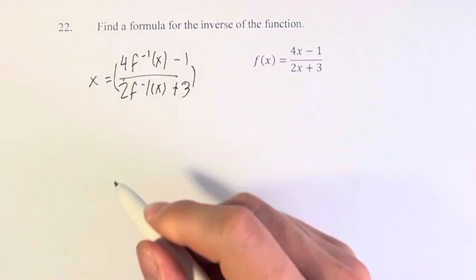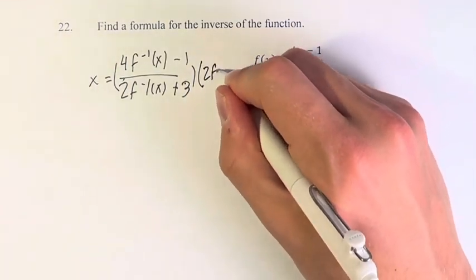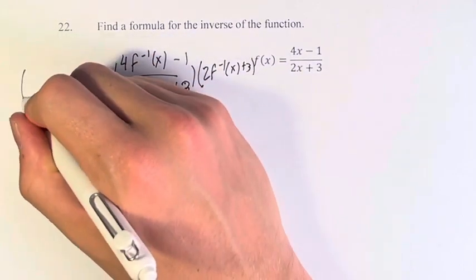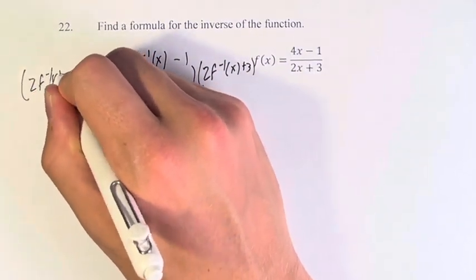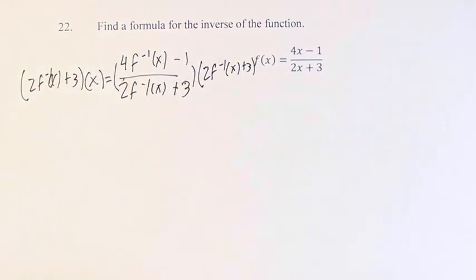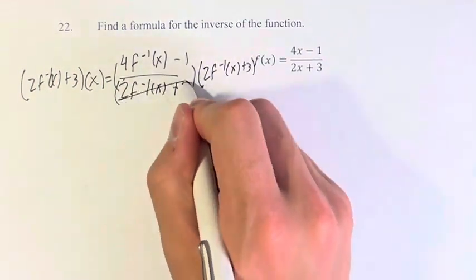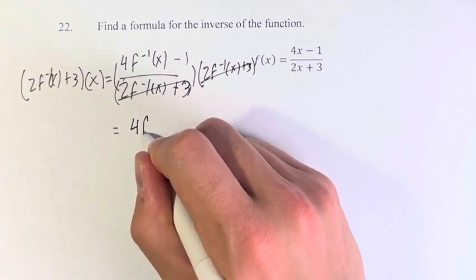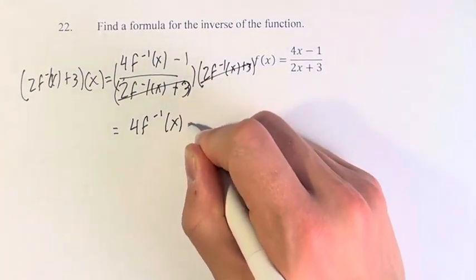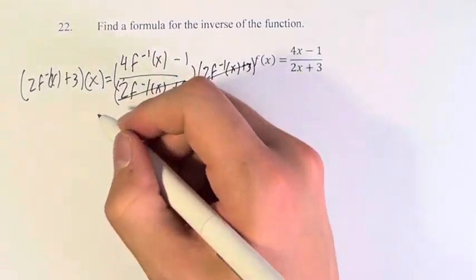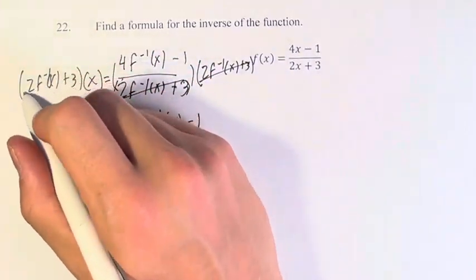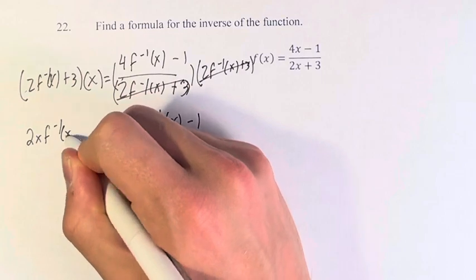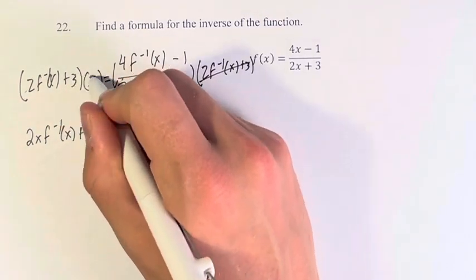So, by eliminating this fraction by multiplying both sides by the denominator, we get, this cancels, and we get 4 times the inverse of f minus 1 is equal to 2x times the inverse of f plus 3 times x.